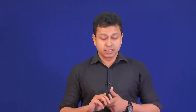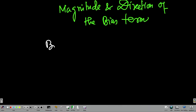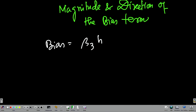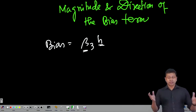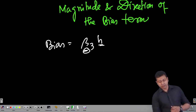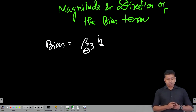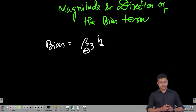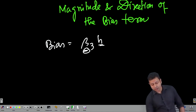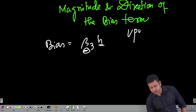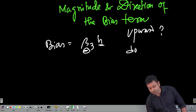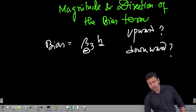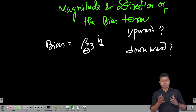In the previous lecture, we spoke about the extent of bias, and we said the bias is β₃ × H, where H is the regression coefficient when we run a regression between the two explanatory variables, and β₃ is the regression coefficient of the omitted variable in the true model. Now we need to understand the different cases — whether the bias is going to be upward or downward — and illustrate that with examples.